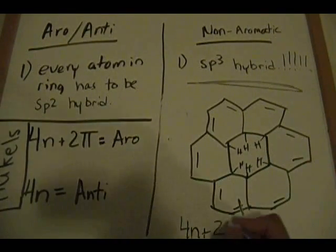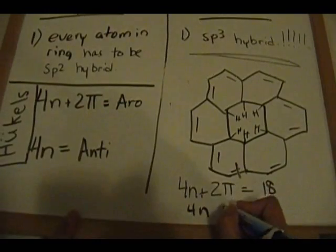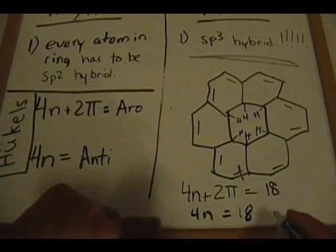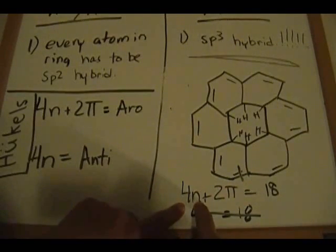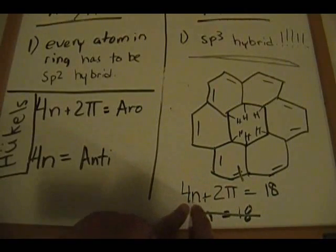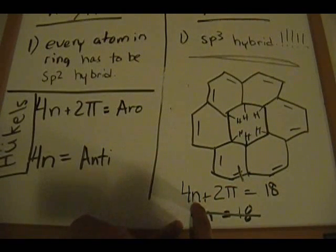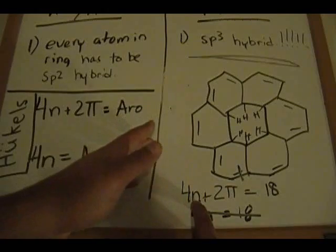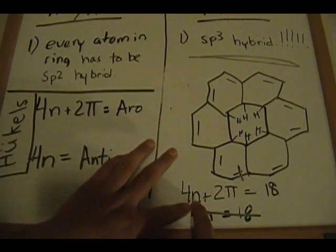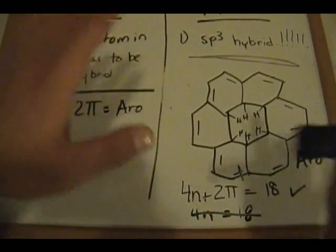So 4n + 2, where pi equals 18. We set 4n equal to 16, meaning n = 4. Let's verify by plugging in numbers: 4 times 3 is 12, plus 2 is 14; 4 times 4 is 16, plus 2 is 18. So plugging in n = 4 gives us 18, which checks out. The whole molecule is therefore considered aromatic — this is NOT non-aromatic.